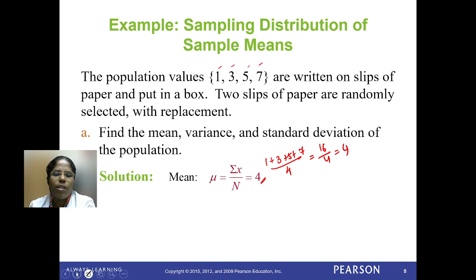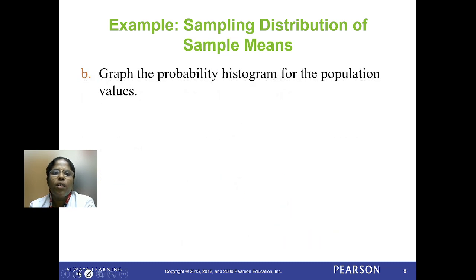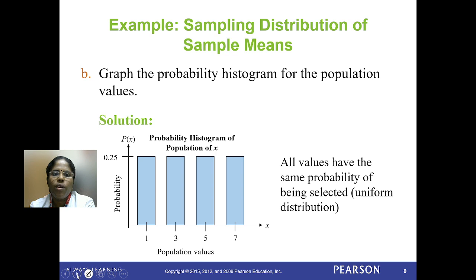The variance is 5 and the standard deviation — taking the square root of the variance — is 2.236. The graph of the probability histogram of the population values gives a uniform distribution because all values have the same probability of being selected. Each value has a probability of 1/4, which is why we get the uniform distribution.